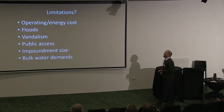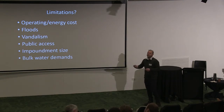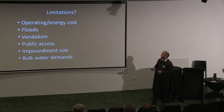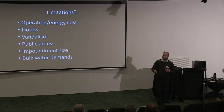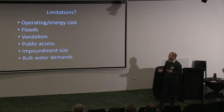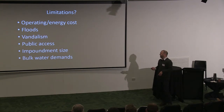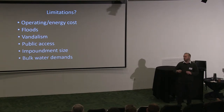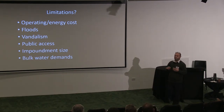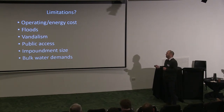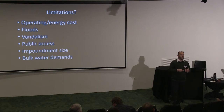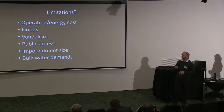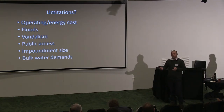The limitations of operating destrat systems include energy, susceptibility to floods, vandalism, and public access because they're not contained within the infrastructure. There's also the question of impoundment size and bulk water demand. The examples shown largely relate to smaller storages that provide stock and domestic water. If we upscale to thousand gigalitre storages like Copeton or Hume, the robustness of that technology is in question. But there is an undoubted case to explore this as an option because it's not constrained as much by water quality as variable level off-takes.